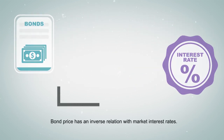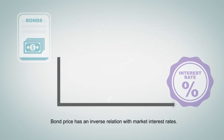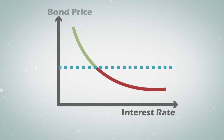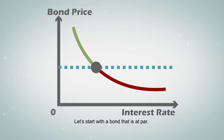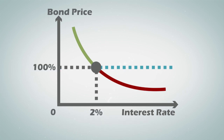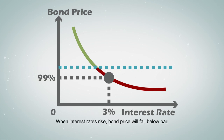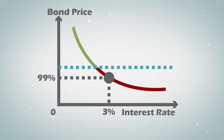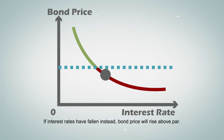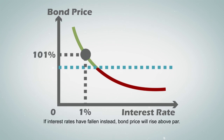Bond price has an inverse relation with market interest rates. Starting with a bond that is at par: when interest rates rise, bond price will fall below par. If interest rates have fallen instead, bond price will rise above par.